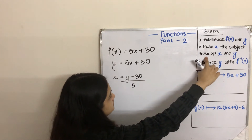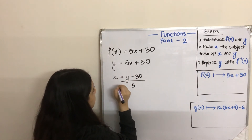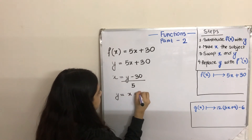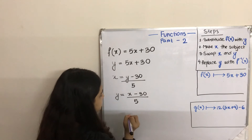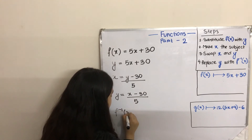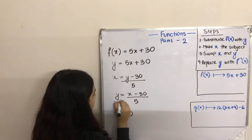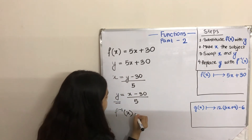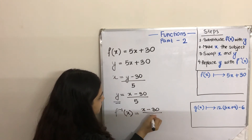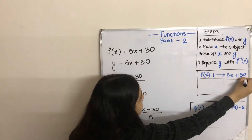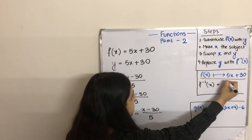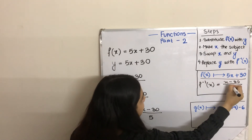Our third step is to swap x and y — we will put x in y's place and y in x's place. So y equals to x minus 30 divided by 5. And then finally, we will replace y with f inverse x. So f inverse x equals to x minus 30 divided by 5. The inverse of this function is f inverse x equals to x minus 30 divided by 5.